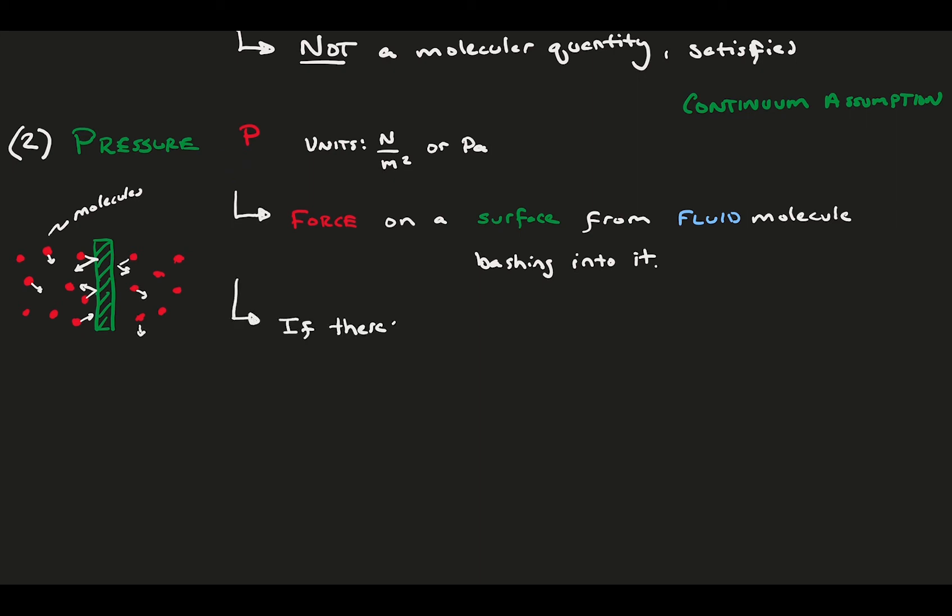Now, if there is a difference in pressure across the surface, for example, more molecules are partying on the left side than the right, then that generates a net force on the surface. This is why pressure difference shows up in the momentum equation.